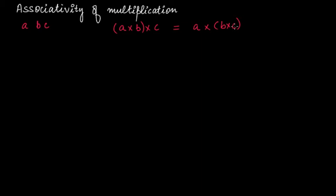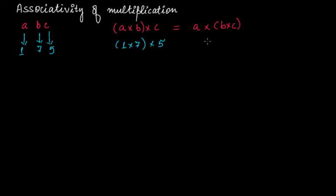Let's assign some values to these integers. Let's say a is 1, b is 7, and c is 5. If a and b are grouped together this will be 1 times 7, and then times 5. The second case is 1 times 7 times 5. Solving these: 1 times 7 is 7, times 5 gives 35; and 1 times 35 also gives 35.